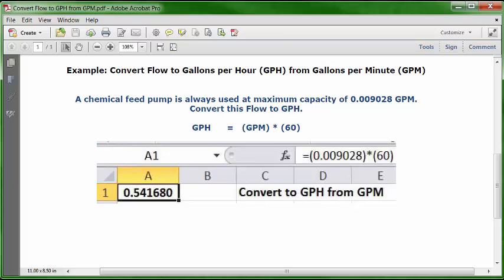And you can go to the formula bar and type in this formula: equal sign, open parentheses, .009028, close parentheses, multiplication key, open parentheses, 60, close parentheses. Then press enter or the return key. And in A1, you will see your answer as .51680 gallons per hour,